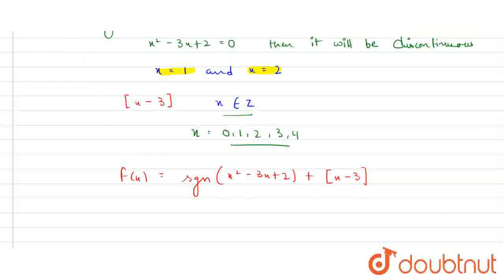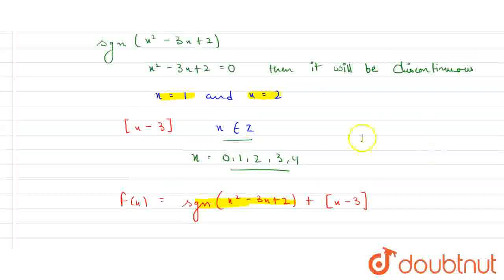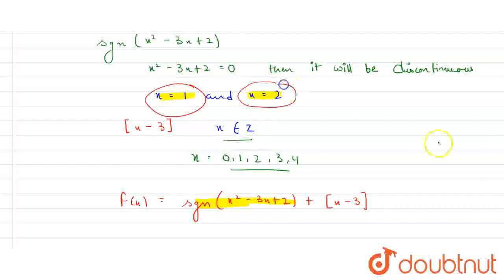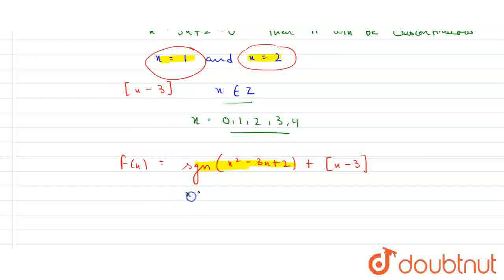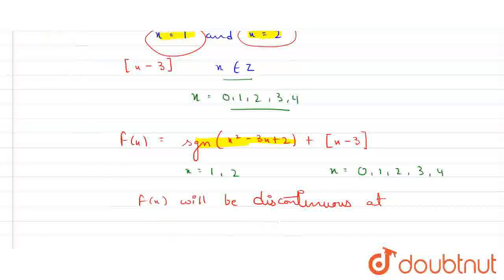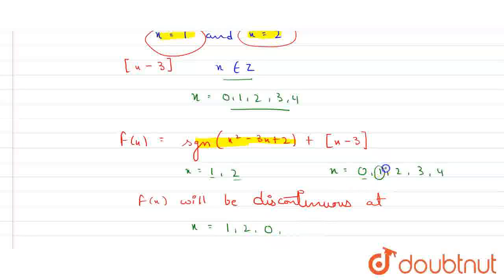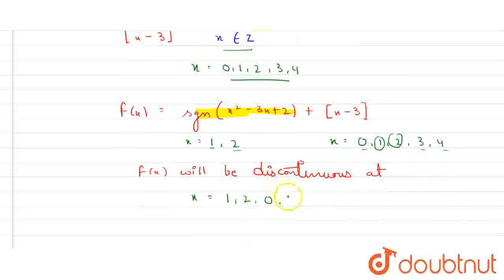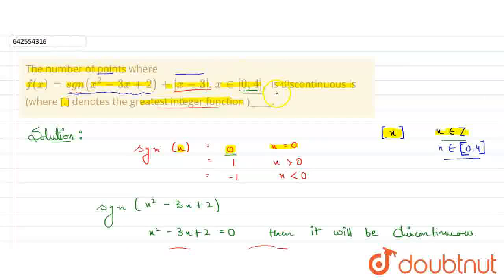Now let's combine the results for f(x). The signum function is discontinuous at x = 1 and x = 2. The greatest integer function is discontinuous at x = 0, 1, 2, 3, and 4. Taking the union, f(x) will be discontinuous at x = 0, 1, 2, 3, and 4. Since 1 and 2 are already included, we count: 0, 1, 2, 3, 4 — that is 5 distinct points. So the answer is 5.